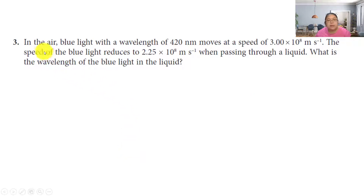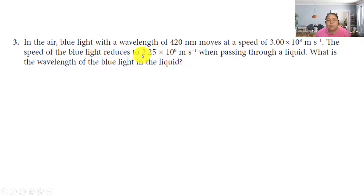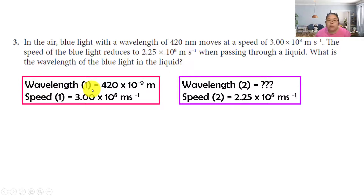Now for a calculation question. Blue light has a wavelength of 420 nm (nano = 10 to the power of negative 9) and moves at the speed of light. The speed of the blue light is reduced as it passes through a liquid — it slows down in the medium. We need to find the wavelength of the blue light in the liquid. The constant here is frequency. Given: wavelength₁ = 420 × 10⁻⁹ m, speed₁ = 3 × 10⁸ m/s. In the liquid, speed₂ = 2.25 × 10⁸ m/s. We need to find wavelength₂.